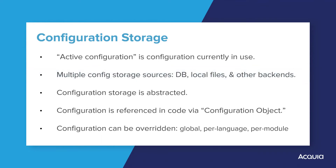One benefit of the configuration API is that rather than being concerned about the details of where and how configuration is stored, we as developers have access to all of the active configuration. The code to interact with configuration does not need to change depending on whether the configuration is stored in the database or in a file in some directory — the actual implementation is abstracted, similar in concept to Drupal's database API abstraction.